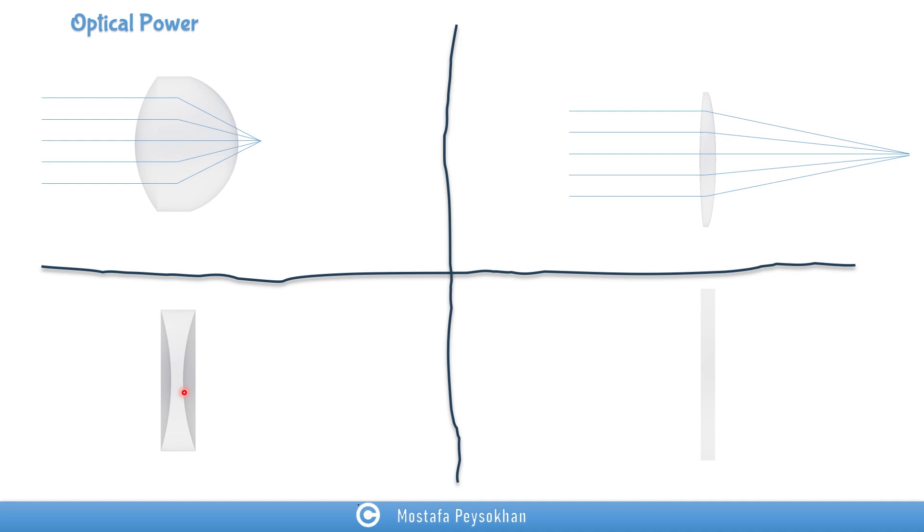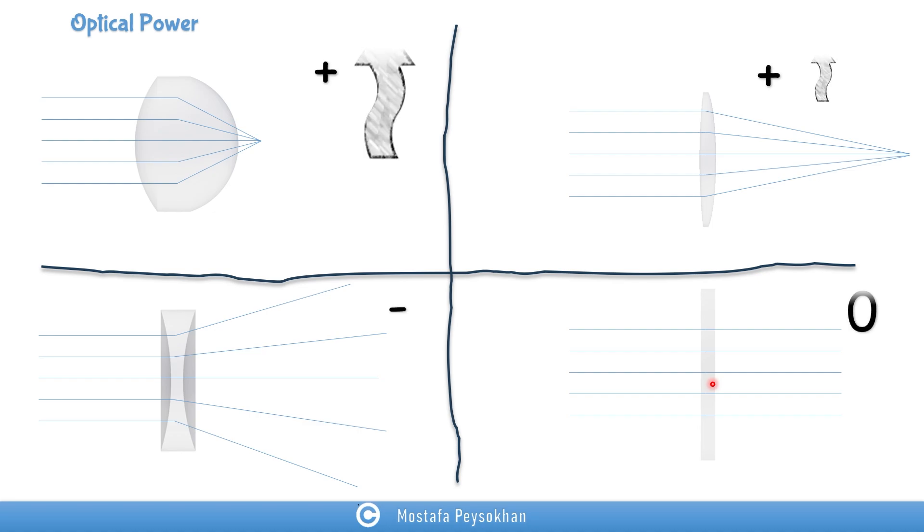This concave lens, biconcave lens, it has a negative optical power because it's diverging the lens, and this piece of glass as a window doesn't have any optical power. So we can say for the first lens, the optical power is high, and it is positive.